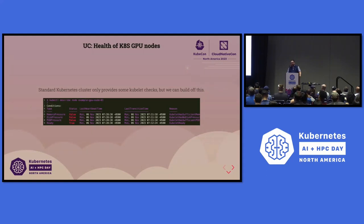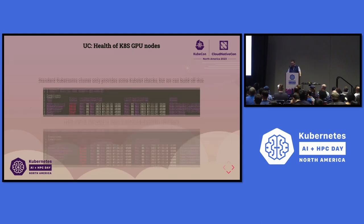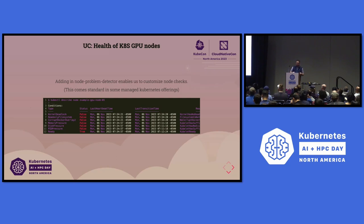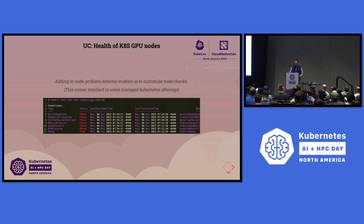We're going to take a use case around telemetry and observability, and talk about what vanilla Kubernetes provides out of the box. Describing a node and looking at node conditions — these are the ones you get with a base installation. We have something called node problem detector, which extends the capability to add checks. In some cloud providers this is a standard offering now — GKE and Azure's Kubernetes offering also has it. But what's missing is a way to check the readiness or health of a GPU node in Kubernetes.